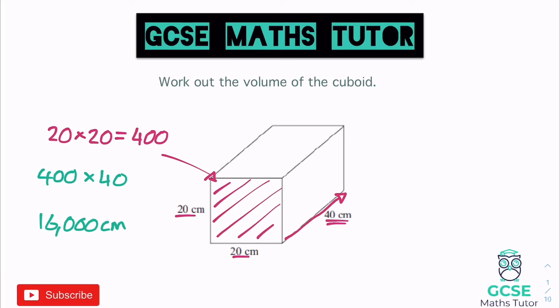That gives us 16,000 centimetres cubed. When we have volume, our units are going to be cubed — or potentially when looking at liquids, something like litres or millilitres. So that is how you work out the volume of a cuboid. Now we're going to look at something slightly harder involving cuboids — a compound shape.